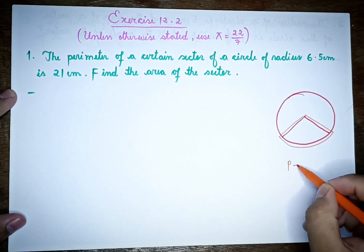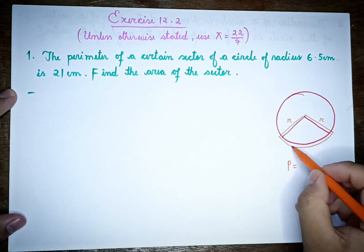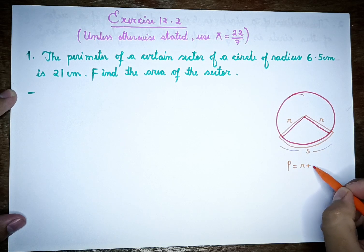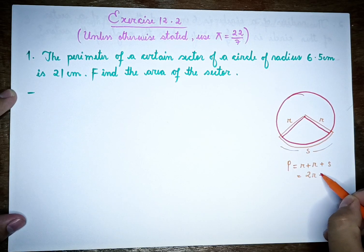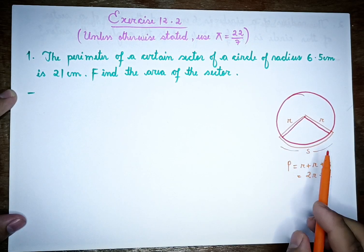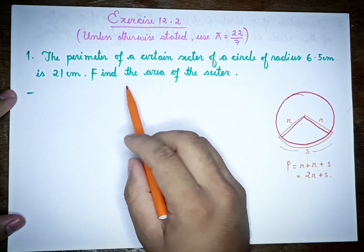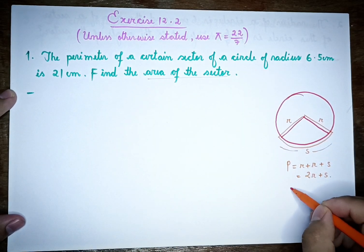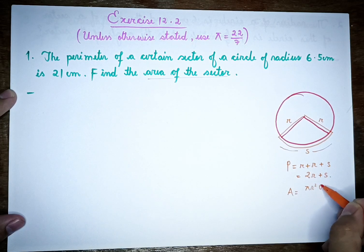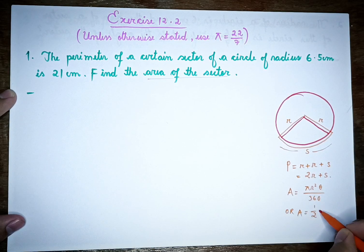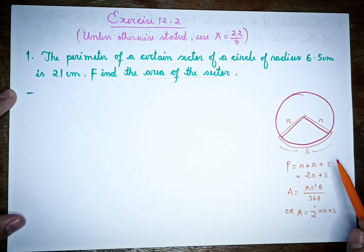The perimeter is R plus R plus S. The perimeter is 21 cm. We have the area of this sector. The perimeter formula is P equals 2R plus S, so if you need to find the arc length S, you can rearrange quickly.